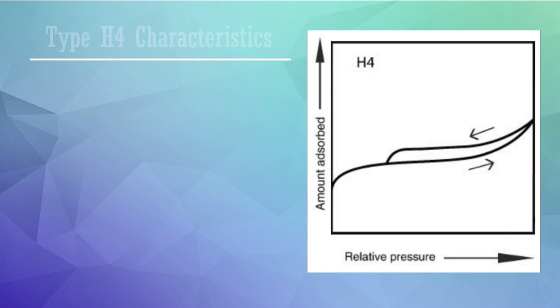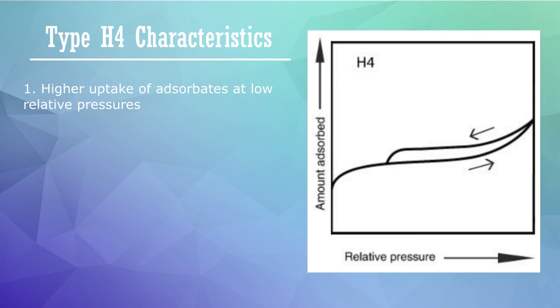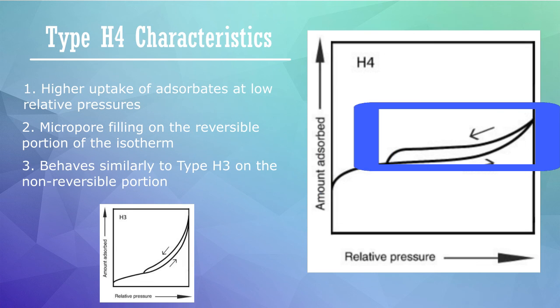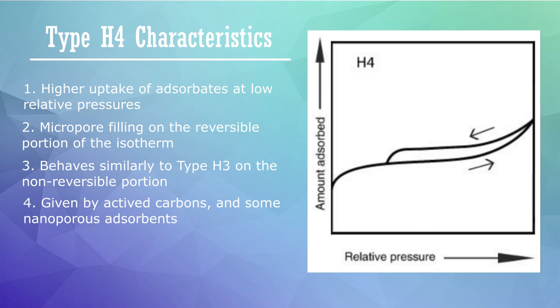Type H4 is somewhat similar to type H3. The key difference is the higher uptake of adsorbates at low partial pressures, which is associated with the micropores filling up first, then behaving similarly to the type H3 on the relatively small non-micropores part of the adsorbent. This loop is given by many activated carbons and some nanoporous adsorbents.